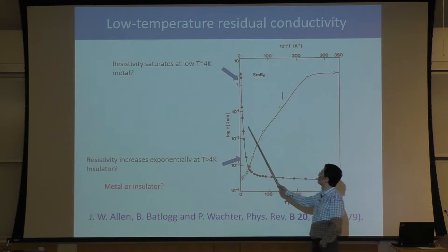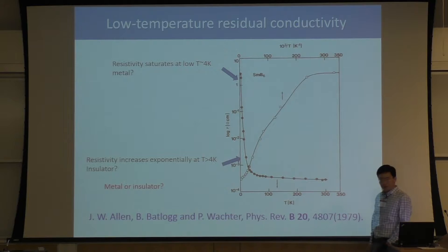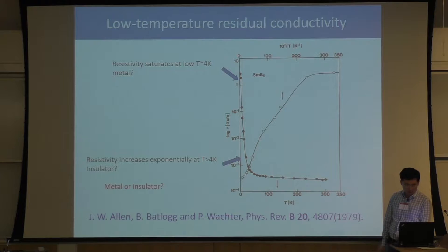A figure measured in the 70s shows the same exponential increase insulating behavior, but at low temperature things start to saturate. And later, people went to even lower temperature — even some millikelvin — and below a couple of Kelvin, one really sees a plateau. The resistivity is almost temperature-independent, with a very small possible logarithmic correction.